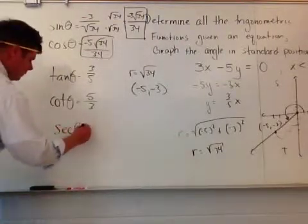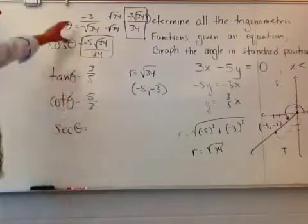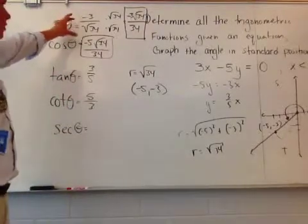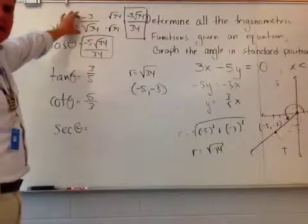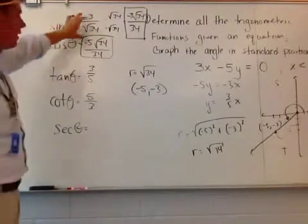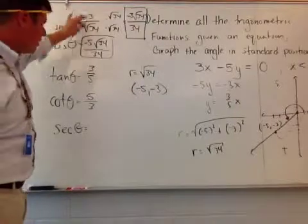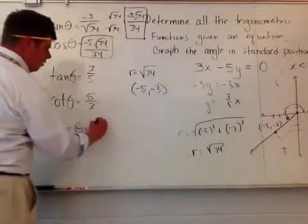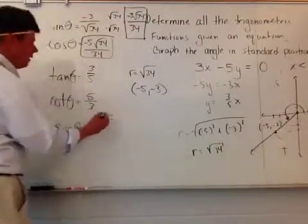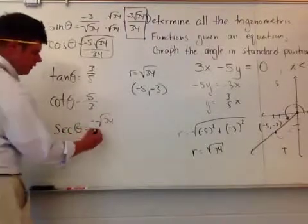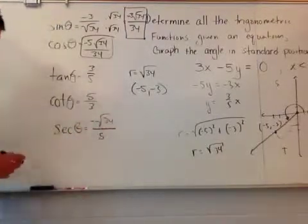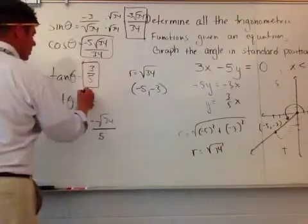And then we have secant theta. And this is when we come back to this form. This is the first form, but that was for sine. Sine is the reciprocal of cosine. So again, thinking about just replacing that negative 3 with a negative 5, take the reciprocal of it. Secant, you get root 34, negative, we usually associate with putting on the top, all over 5. So here's my answers in the boxes here.